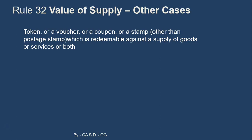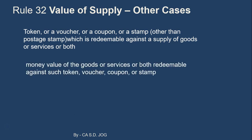Another case under Rule 32: in the case of a token, voucher, coupon, or stamp other than postage stamps, which is redeemable against supply of goods or services or both — say a discount coupon received for purchases made in a mall — what will be the value of supply? It is the money value of goods or services redeemable against such token, voucher, coupon, or stamp. For example, Sodexo vouchers.